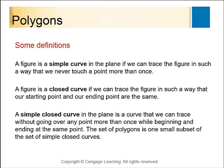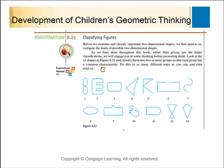A simple curve is one that we can trace in such a way that we never touch a point more than once. So looking at our examples: number 7 is simple because I can draw it and never touch a point more than once. Number 6 is also simple. Number 10 is not simple because I touch some points more than once.